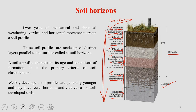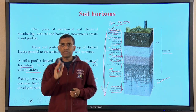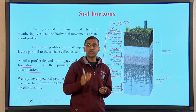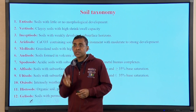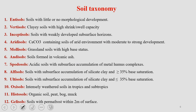A soil profile depends on its age and conditions of formation, and these serve as the primary criteria for soil classification. From the soil profile, we move into soil classification. Here we have the opportunity to look at soil or land as a natural resource and some basic characteristics, so that we can understand how we should actually manage these important resources. Taxonomy is another important part of land or soil management.